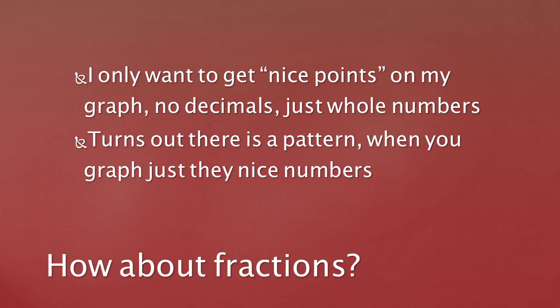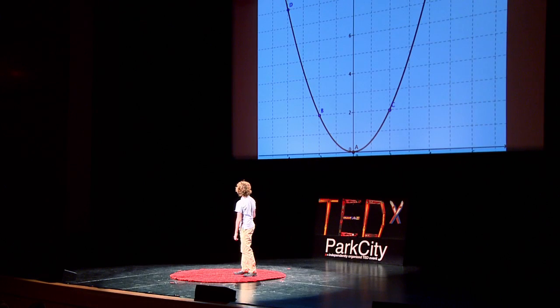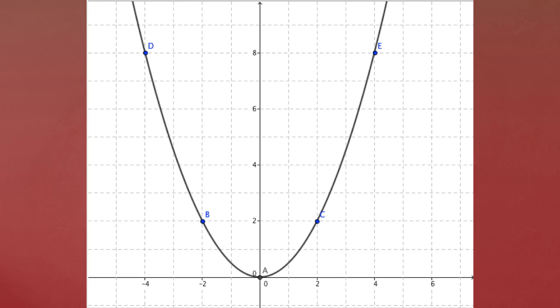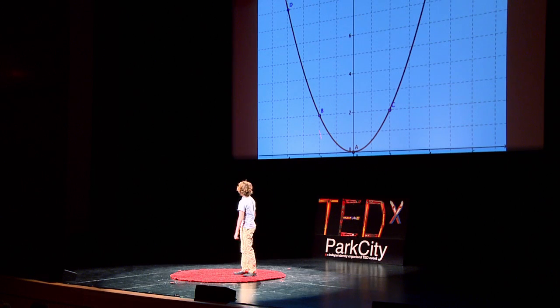A nice number is one that falls on one of the grid crosses on the axis. If you graph the not-nice points and then erase the ones that aren't nice, you get another pattern — the exact same 1, 3, 5, except you multiply both sides by 2. So you move over 2, up 2; over 2, up 6; over 2, up 10. And this is equivalent to 2y equals 2x squared.